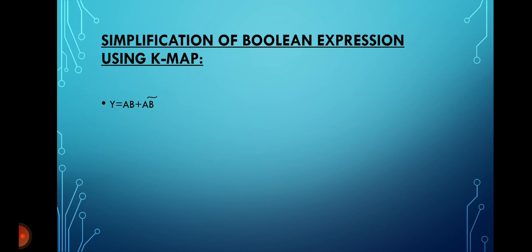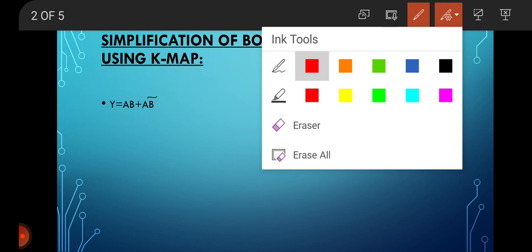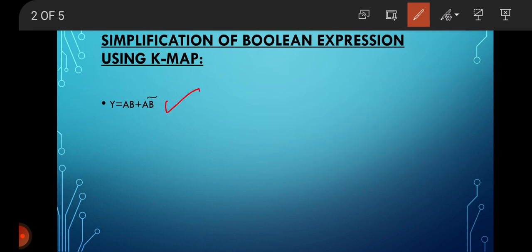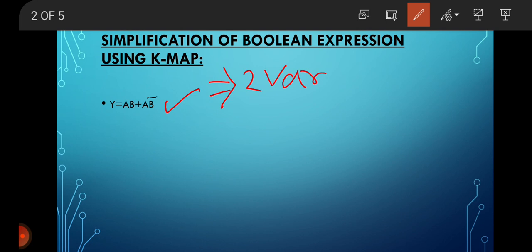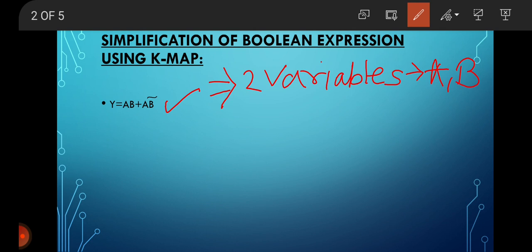So see simplification of boolean expressions. This is one of the boolean expressions for a circuit. See here, how many variables are present here — two, three, four, or five variables? Two variables are present here, which are A and B. Therefore two variables are present: A and B. So for two variables we know how to draw the K-map.